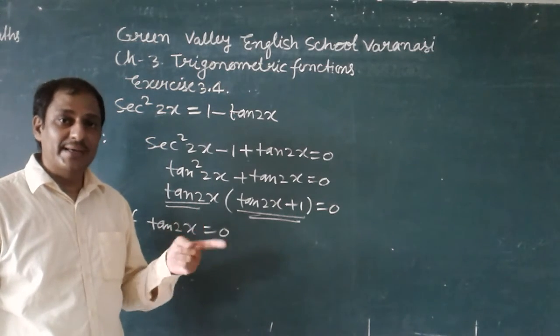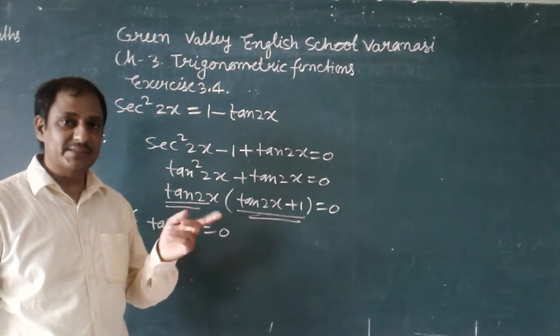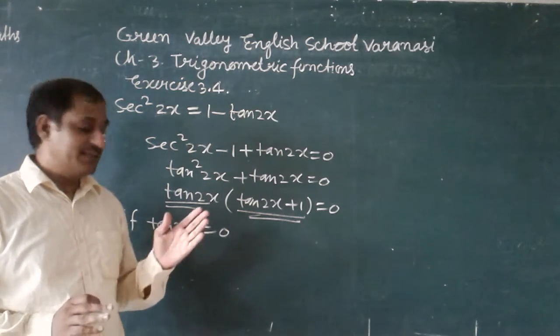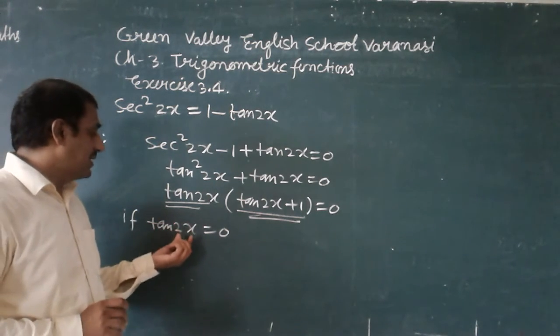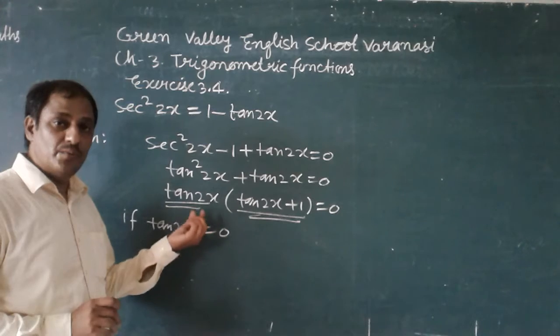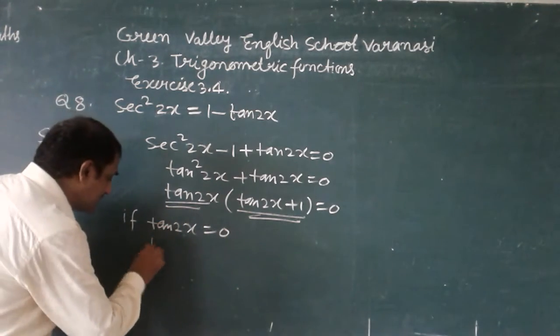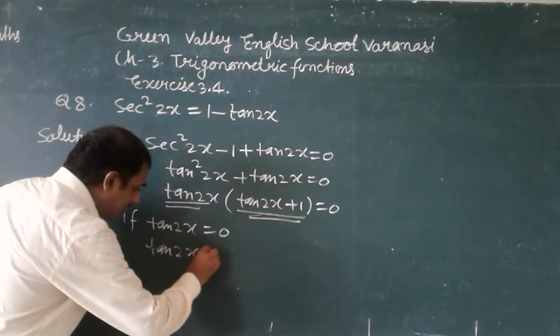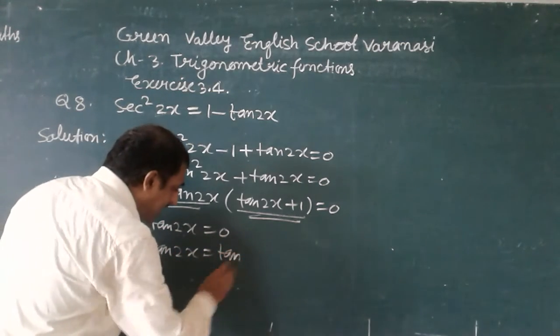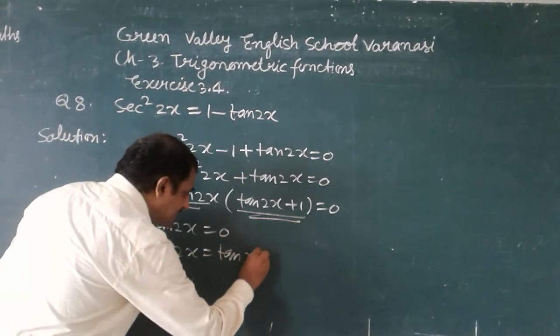At 0, π, 2π, 3π, and so on up to nπ, the value of tan function is 0. It means we can write tan2x is equal to tan(nπ). Here n is an integer.